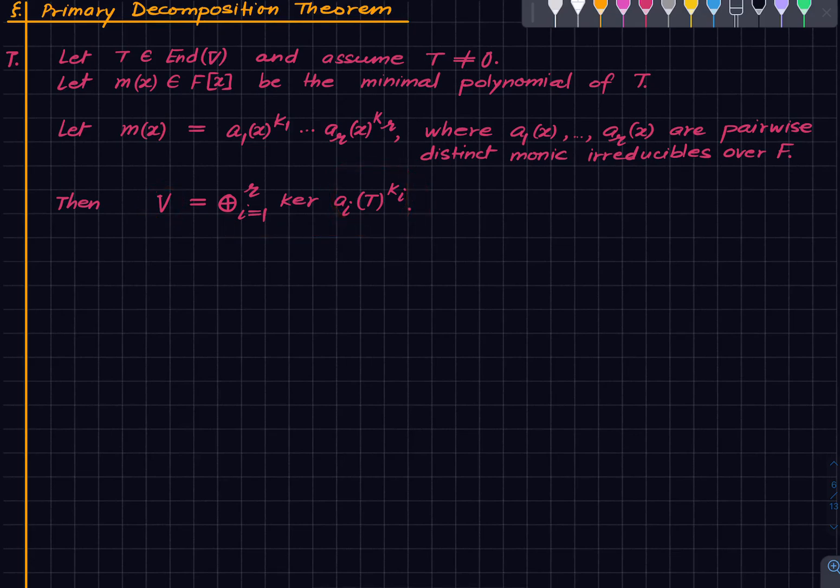So then we want to say that V is the direct sum of the kernels of these guys. And the proof is very simple. Just apply the previous proposition. We know that kernel of m(T) is kernel of this product. V, let me write it this way. Hopefully we'll make things clearer.